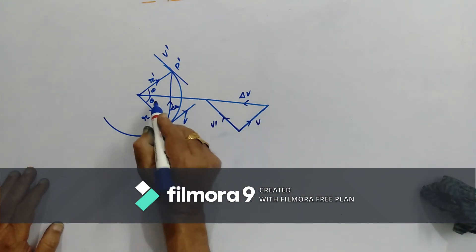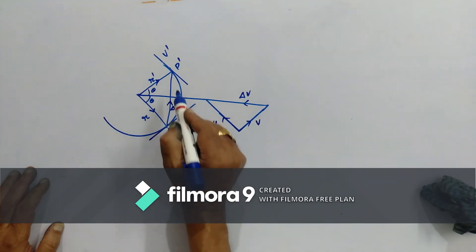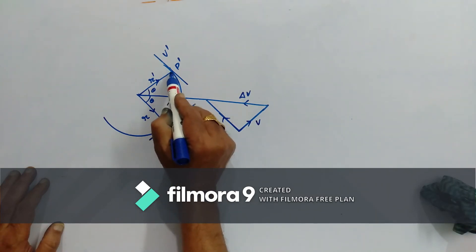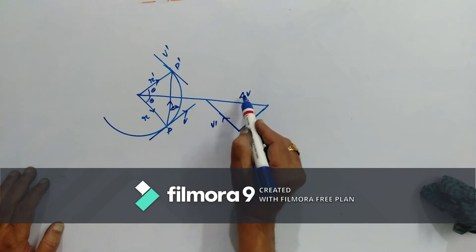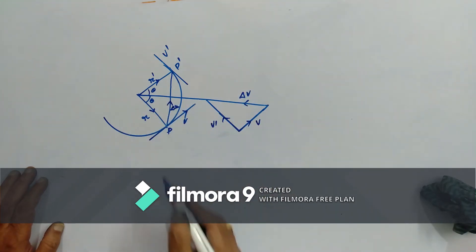Now these two triangles are similar triangles. Why? Because here this R makes 90 degrees with it as tangent and radius will make 90 degrees with each other and here also 90 degrees and then therefore this delta V is also making 90 degrees with the delta R.